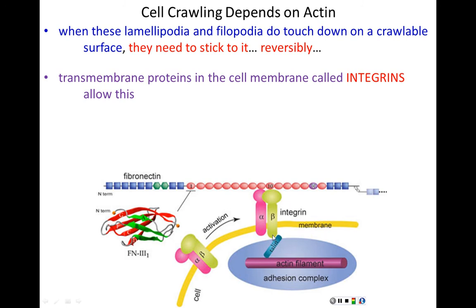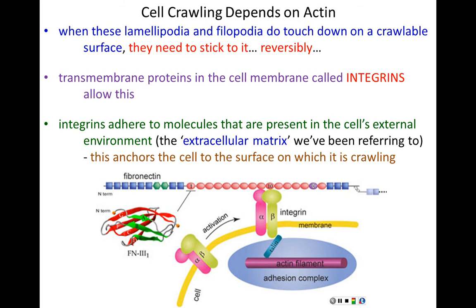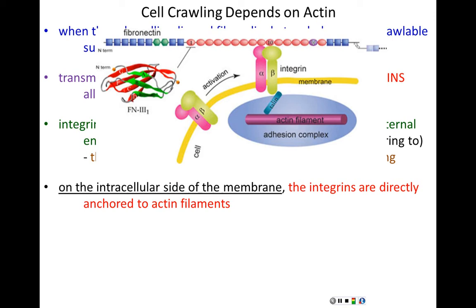Integrins are transmembrane proteins with an intracellular side and an extracellular side. The integrins adhere to molecules present in the cell's external environment — the integrins stick to molecules that the cell is crawling on, in this case fibronectin, a component of the extracellular matrix. Integrins on the intracellular side of the membrane are directly bound to actin filaments, so actin filaments are involved indirectly in the anchoring because the actin filament is bridged to the crawlable surface through integrins.